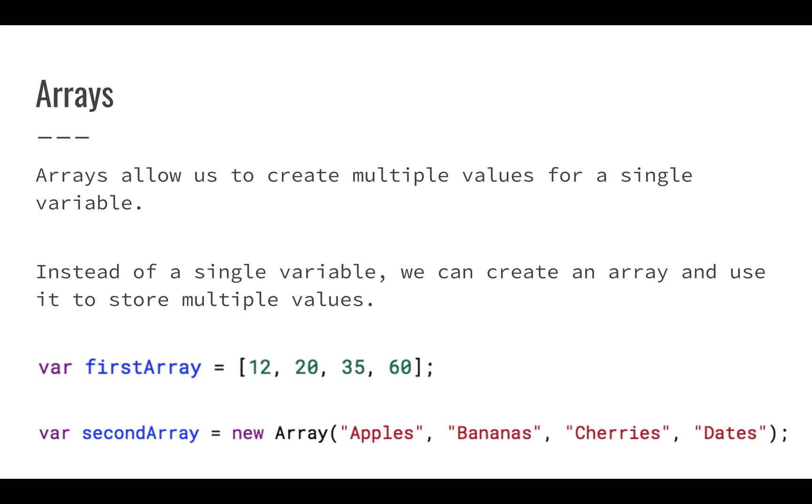I just give it a few values. So this first array has four values: 12, 20, 35, and 60. The second array that I have here, I'm creating a slightly different way. Typically we don't see this way for creating arrays in JavaScript or Apps Script. Usually we use this first way where we just use the square brackets and put things into it. But you can use the second one, new Array, and then we can put in apples, bananas, cherries, and dates. So you can see we're just giving it multiple values.